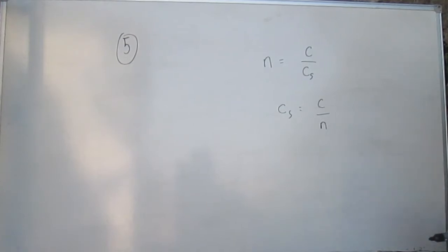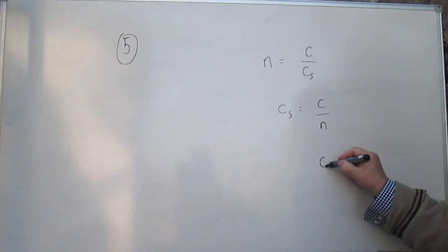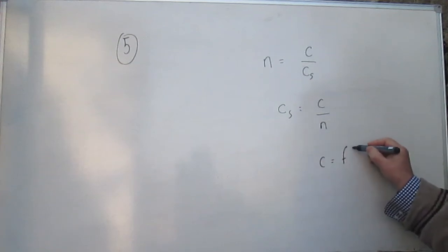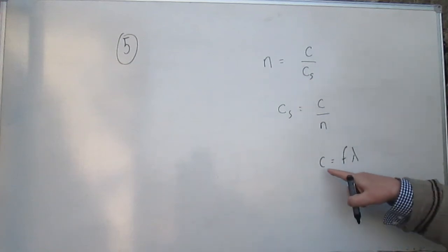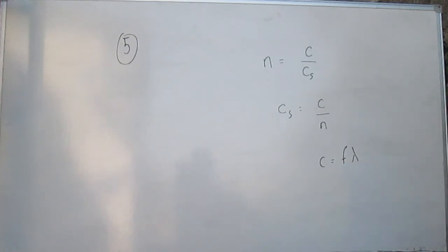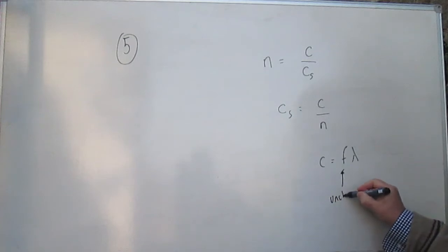And then the question is, what makes it decrease? We know that we have this relationship, c is equal to f lambda, where the velocity of a wave is equal to the frequency times the wavelength. And the bit you have to remember is that the frequency is unchanged.